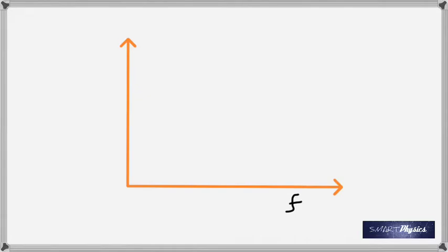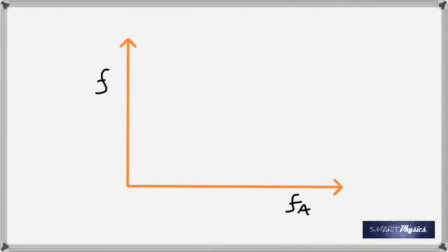There are two types of friction. The friction before an object starts moving is called static friction. The friction after it starts moving is called kinetic friction. If you draw a graph with applied force on the x-axis and friction on the y-axis, you get a characteristic curve showing how friction changes.